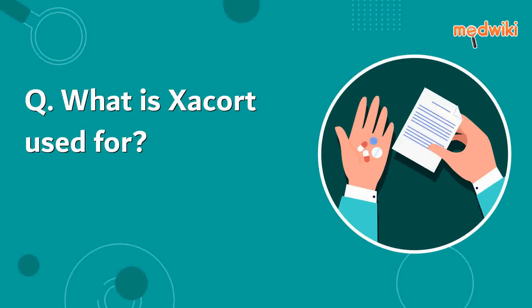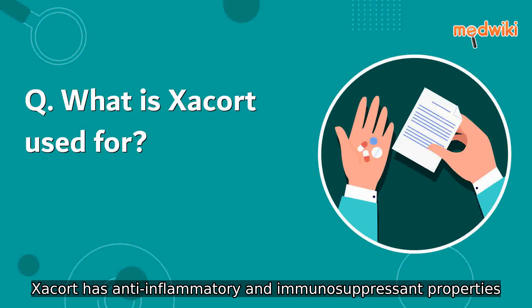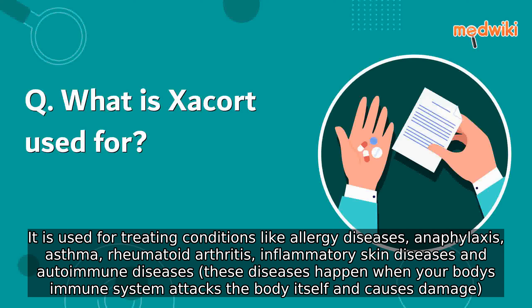What is Zaccot used for? Zaccot has anti-inflammatory and immunosuppressant properties. It is used for treating conditions like allergy diseases, anaphylaxis, asthma, rheumatoid arthritis, inflammatory skin diseases, and autoimmune diseases. These diseases happen when your body's immune system attacks the body itself and causes damage.